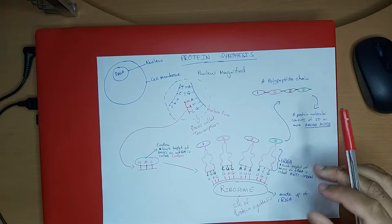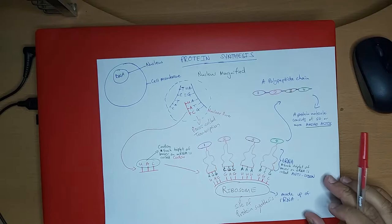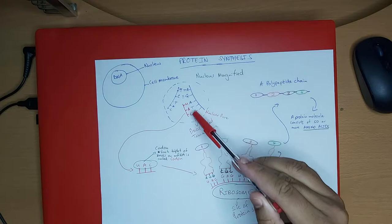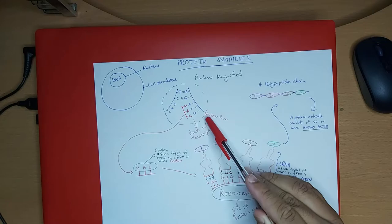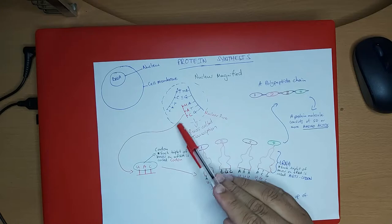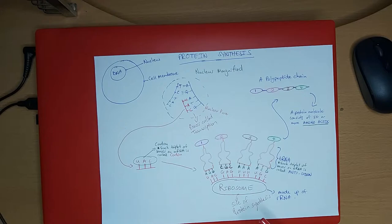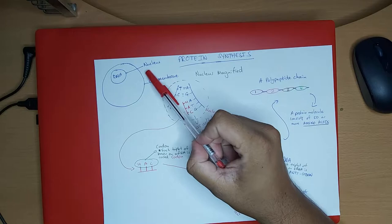Now we move on to the third step. The mRNA has been transcribed; transcription has been completed. Now the mRNA has to detach from the DNA. It detaches and leaves through the spaces in the nuclear membrane — the nuclear pores. The mRNA then moves through the nuclear pores to a specific site in the cell, an organelle called ribosomes.